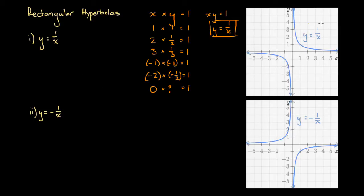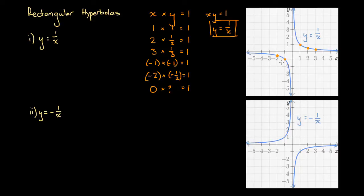This equation is graphed here. We can identify the coordinate pairs we examined earlier on the graph. When x equals one, y equals one — that's this point. When x equals two, y equals half — that's two units to the right and half a unit up. When x equals three, y equals a third — that's this point. So by doing this problem we've essentially drawn up a table of values for the hyperbola. We can also plot the negative ones: at x equals minus one, y equals minus one; at x equals minus two, y equals minus a half.